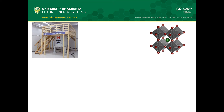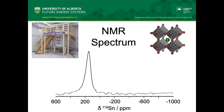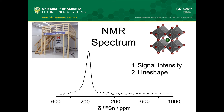These resonant frequencies are then measured and converted into peaks on a graph, which we call an NMR spectrum. Depending on how high the peak is — the signal intensity — what the peak looks like — the line shape — or where the peak shows up on the graph — the chemical shift — we are able to determine what is happening around these specific atoms.